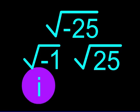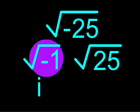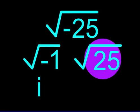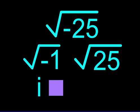That's right! i is the square root of negative 1. We also have to find the square root of 25. What number times itself equals 25?